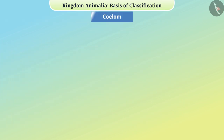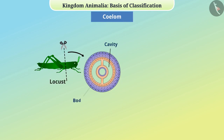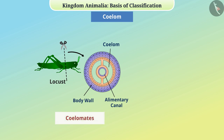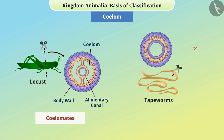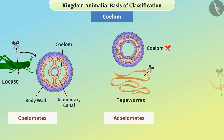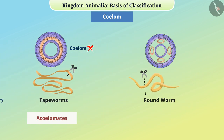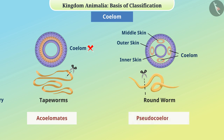Coelom: Some animals such as locusts have a cavity between the body wall and the alimentary canal called coelom, and those which have coelom in the body are called coelomates. Some animals such as tapeworms do not have a body cavity — they are called acoelomates. In some animals such as roundworm, the body cavity is in the form of a sac scattered between the middle skin and the outer skin — these animals are called pseudocoelomates.